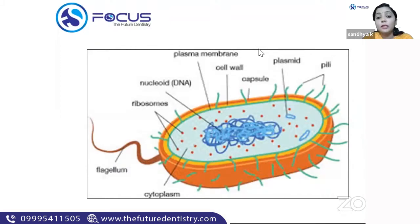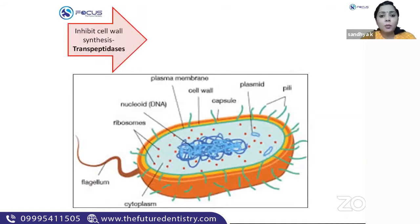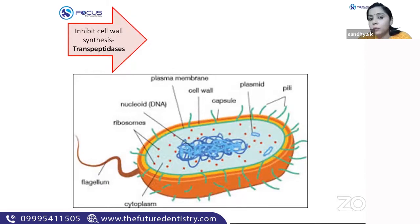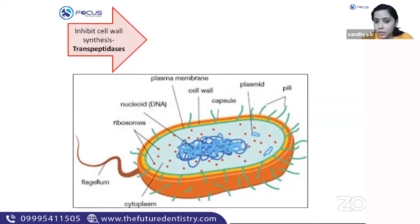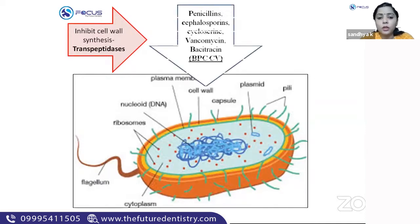This is a bacterial cell. First of all, the cell wall. What are the antibiotics which inhibit cell wall synthesis? There is an enzyme called transpeptidase, which is required for the proper cross-linking of the cell wall of the bacteria.